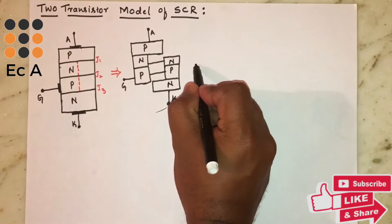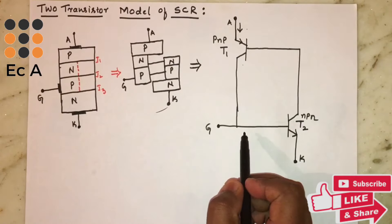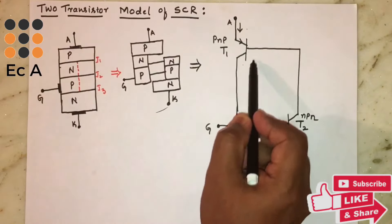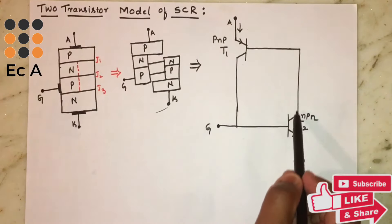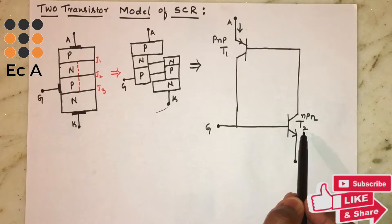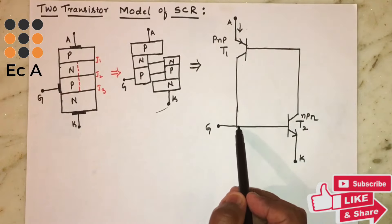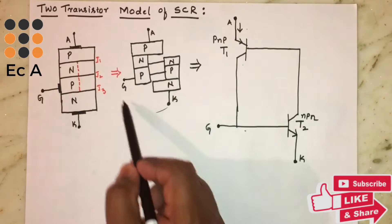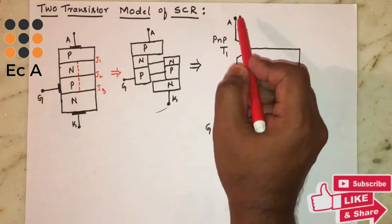Now let us write the equivalent circuit for this structure. We have taken a PNP transistor and an NPN transistor. The base of the PNP transistor is connected to the collector of the NPN transistor, and the collector of the PNP transistor is connected to the base of the NPN transistor.